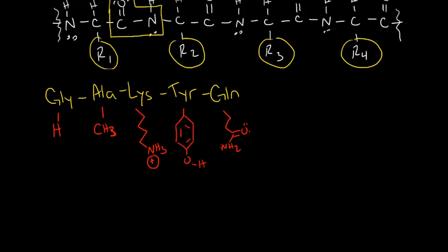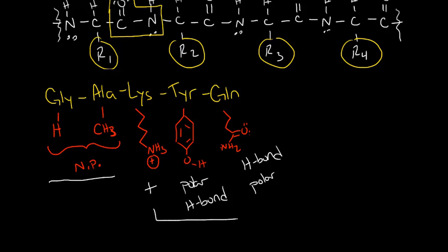If we look at each of these, we can see these two give nonpolar functionality. These are not polar side chains, so this gives nonpolar functionality. But lysine gives us a positive charge, tyrosine gives us a polar side chain with hydrogen bonding potential, and glutamine does the same. We have H bond potential and we are a polar side chain. So we have a nonpolar region and we have a polar region.